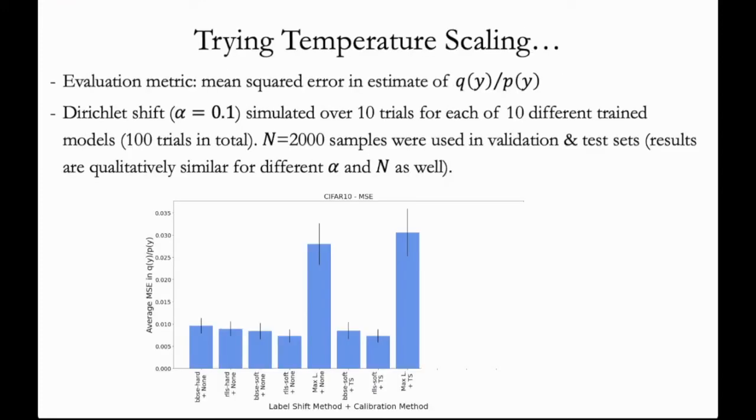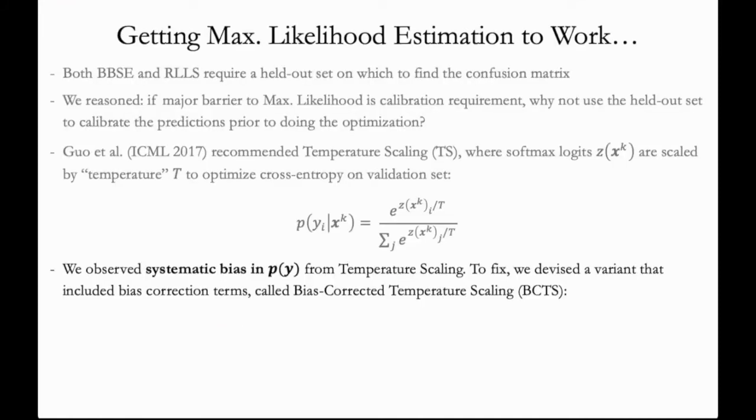Unfortunately, when we applied temperature scaling, we found that it often did not improve the results by much. In fact, in the CIFAR-10 example, it seems to have worsened the results. So what's the issue? One thing we observed was that temperature scaling often left behind a systematic bias in the calibrated probabilities.